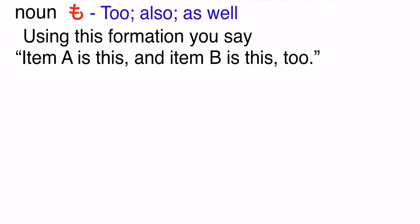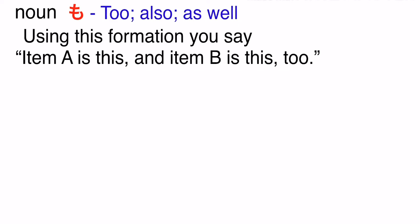In lesson 1, we learned how to say item A is this, item B is that. We now learn how to say item A is this and item B is this too. Using this formation, we can say item A is this and item B is this too.